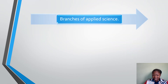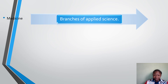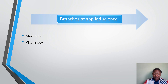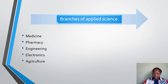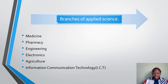Applied Science also has branches. The branches of Applied Science include: Medicine, Pharmacy, Engineering, Electronics, Agriculture, and Information Communication Technology — that is, ICT. There are more, but we are looking at these.